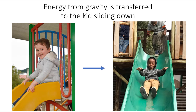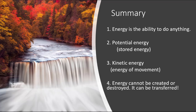Another example: energy from gravity is transferred to a kid sliding down. The kid is on top of the slide and as he goes down, the energy is transferred. In summary, energy is the ability to do anything — play, dance, think, eat, or store energy for later. There are two main types: potential energy, which is stored energy, and kinetic energy, which is the energy of movement. Finally, energy cannot be created or destroyed — it can only be transferred. That is your first law of thermodynamics.